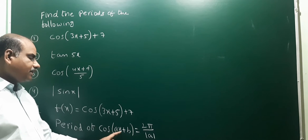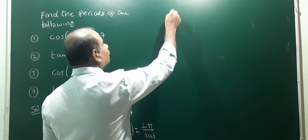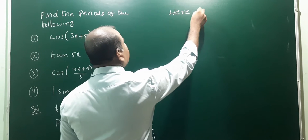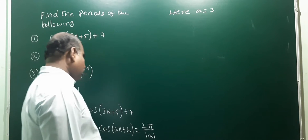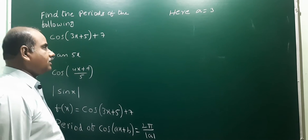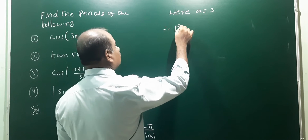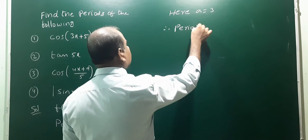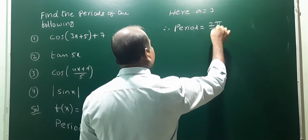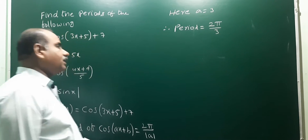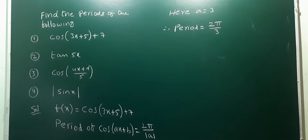Here, a is the coefficient of x, and that value is 3. Therefore, the period is equal to 2π divided by mod(3), which equals 2π/3. That is the answer for the first problem.